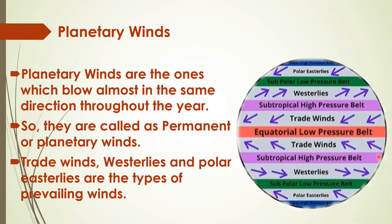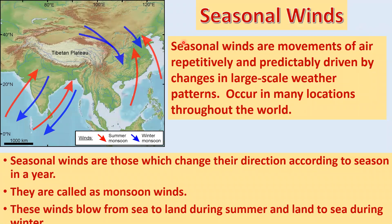Seasonal winds change their direction according to the season and are called monsoon winds. The word 'monsoon' is derived from the Arabic word 'mawsim' meaning season. These winds blow from sea to land during summer and from land to sea during winter. During summer, a low pressure system develops over the land while high pressure prevails over the ocean, so wind blows from the high pressure ocean towards the low pressure land — this is the southwest monsoon. During winter, high pressure develops over land and low pressure over the ocean, so wind blows from land to ocean.